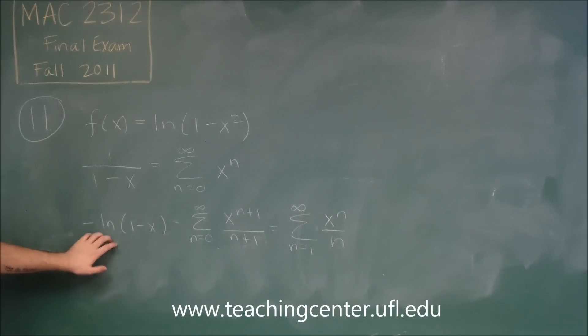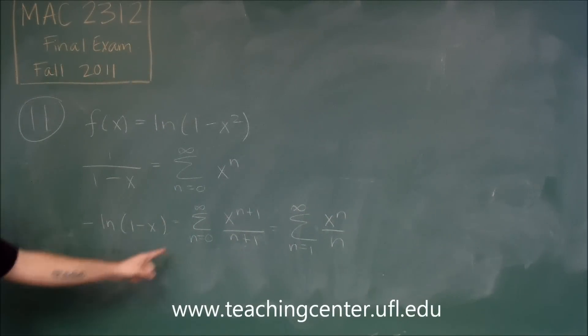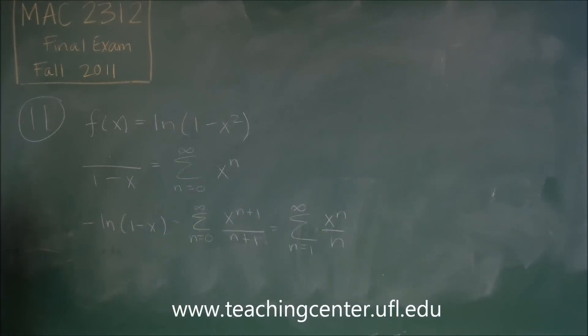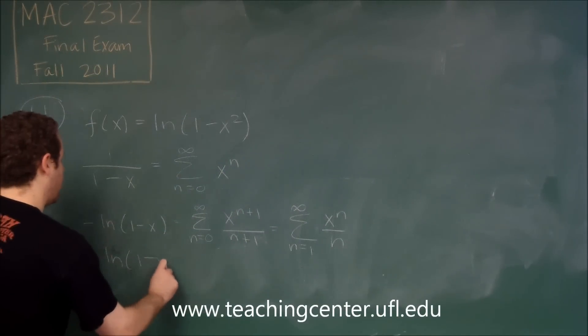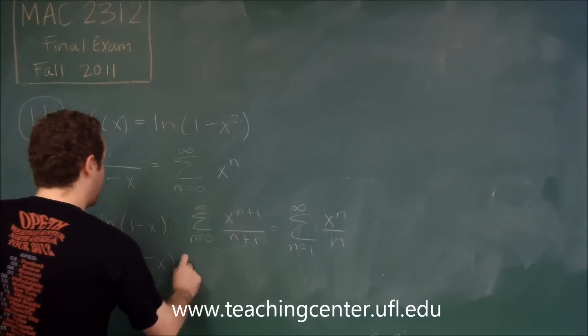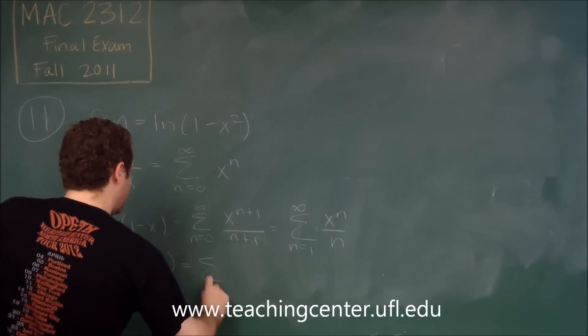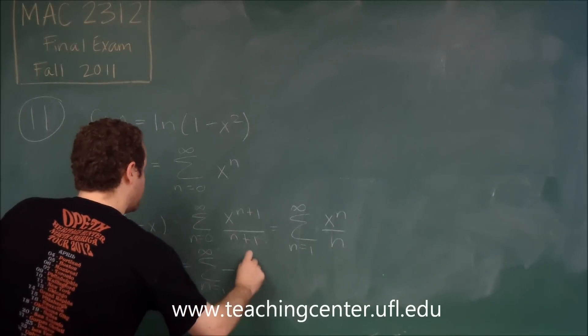So what's different from this one to this one? Well, if we want to transform this into ln(1-x²), we need to do a couple things. First we need to get rid of that negative sign. So if we just have ln(1-x), we would just have negative of what's there.